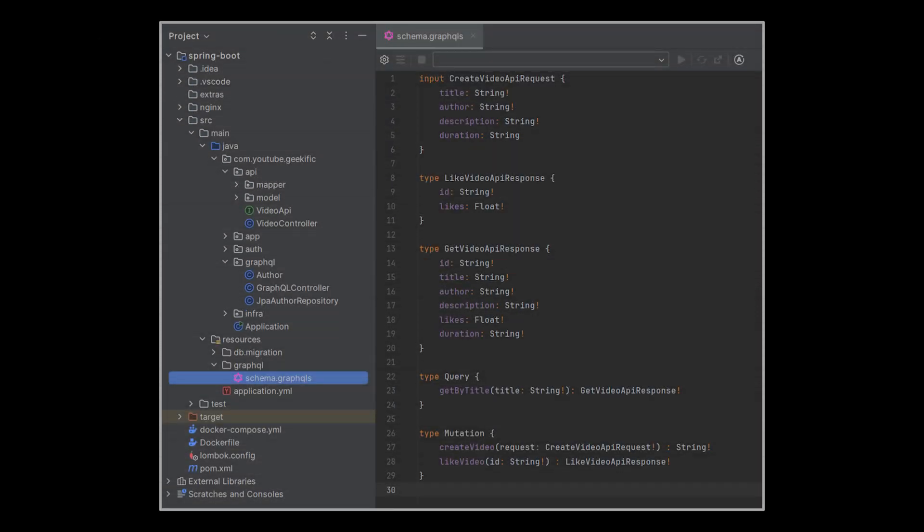Also, under our resources folder we will create a schema.graphql file. In this file we will redefine all the request and response objects used by the APIs we just copy pasted.